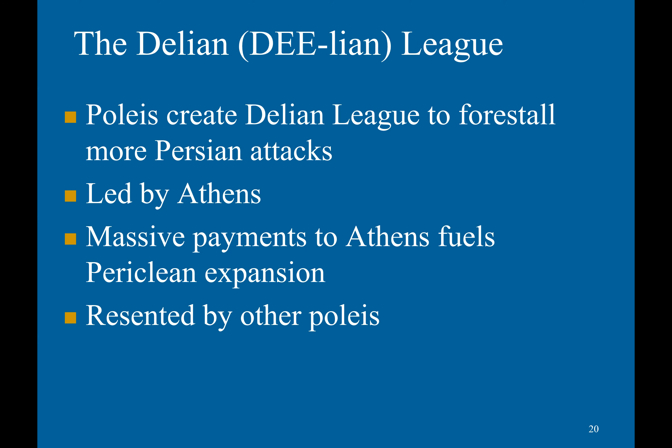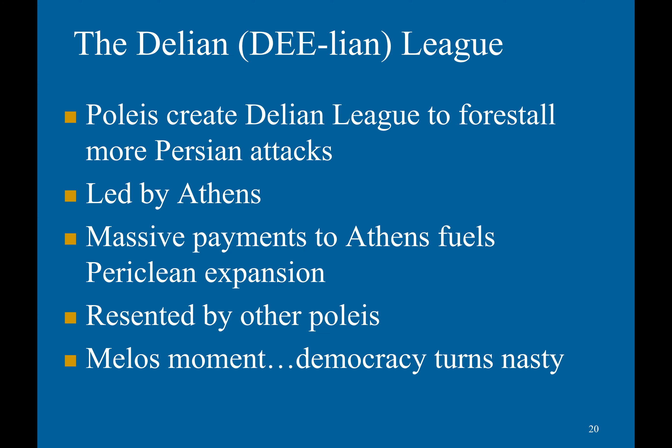Unfortunately, Pericles started using this defense money to fund his own public works projects. The other city-states were furious — they had contributed money for collective defense, and now it was being used to glorify Athens. Athens also became increasingly tyrannical toward its neighbors. For example, at the Greek colony of Melos, when Athenian soldiers arrived and offered a choice of joining Athens or Sparta, Melos said they wanted to stay neutral. The Athenians responded by slaughtering all male occupants and enslaving the women and children. Democracy was turning really nasty.